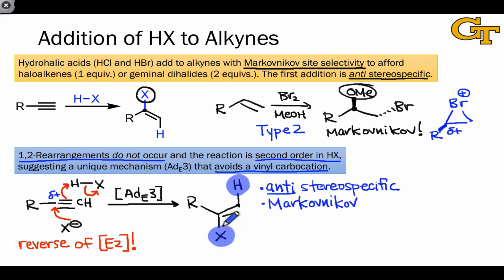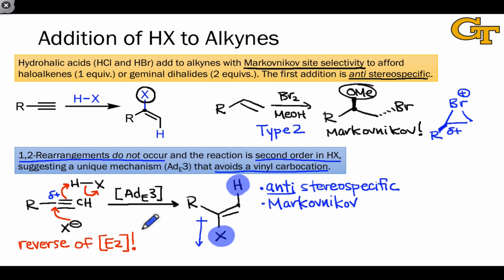Addition of HX across an alkyne generates an alkene, which is susceptible to further addition. However, because X is a halogen atom and therefore inductively electron-withdrawing, it withdraws electrons from the alkene, making the product alkene less reactive as a nucleophile than the starting alkyne. This makes it possible to isolate the alkenyl halide product when only one equivalent of HX is used.